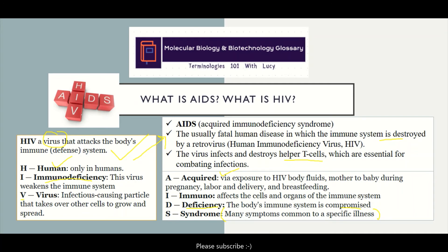People who progress to AIDS after infection with HIV may develop Kaposi's sarcoma, which is a cancer, as well as tuberculosis, pneumonias, and many other illnesses — because at the AIDS stage, your body is no longer able to fight off disease.